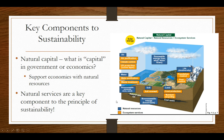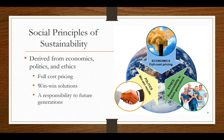We also have ecosystem services. In this diagram, the blue represents natural resources and the orange represents ecosystem services. Unlike natural capital, ecosystem services are things that the environment and nature does for free — like the purification of air and water. We must have these ecosystem services in order to have healthy ecosystems.